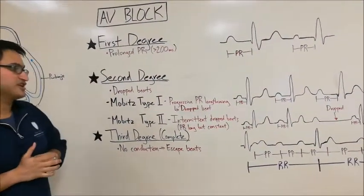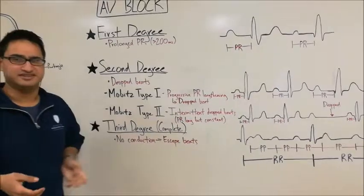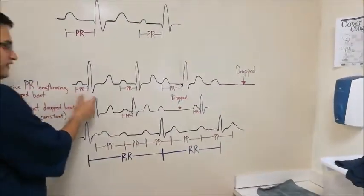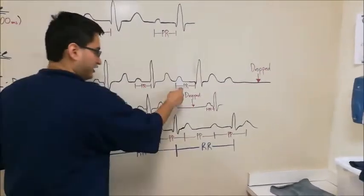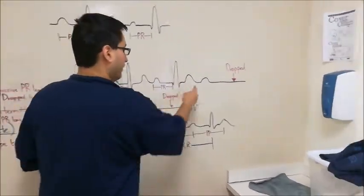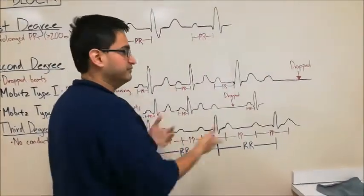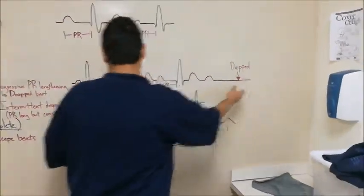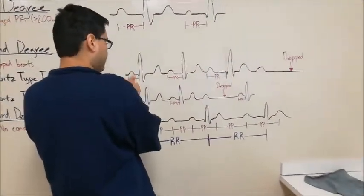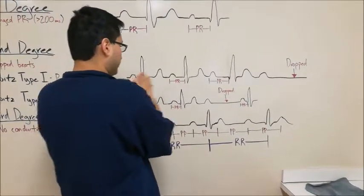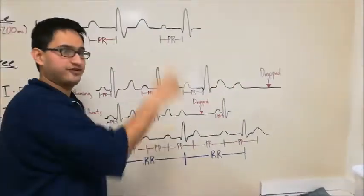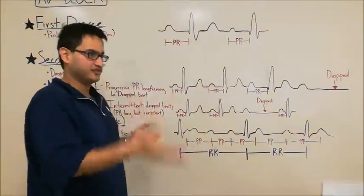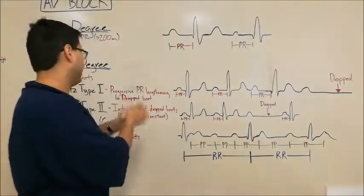In Mobitz type 1, we have progressive PR lengthening and then a drop beat. So let's take a look at this EKG here. We have this PR interval, we then have this PR interval, this is longer than that. And then this is longer than that. And then, boom, a dropped QRS complex. That's a dropped beat. The ventricle did not contract. Now after this, it would reset similar to this where you have a PR that's long but not too long, and then a longer one, and then a longer one, and then a repeat again. So it follows a very cyclic pattern. So if you see that cyclic pattern of prolonging PRs, then a drop beat, and then it starts all over again, that's Mobitz type 1, also called Wenckebach.